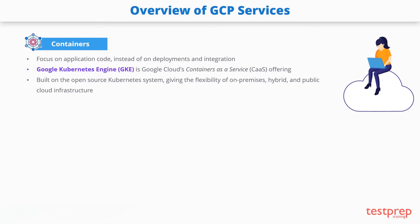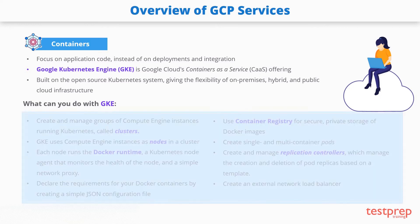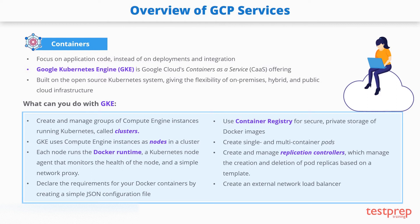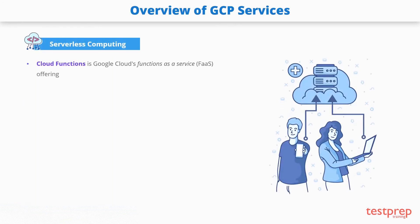With container-based computing, you can focus on your application code instead of deployments and integration into hosting environments. Google Kubernetes Engine (GKE) is Google Cloud's containers as a service offering, built on the open-source Kubernetes system, giving you the flexibility of on-premises or hybrid clouds. With GKE, you can create and manage groups of Compute Engine instances running Kubernetes, called clusters. GKE uses Compute Engine instances as nodes, each running the Docker runtime. You can set requirements for your Docker containers using a simple JSON configuration file, use Container Registry for private storage of Docker images, and also create an external network load balancer.